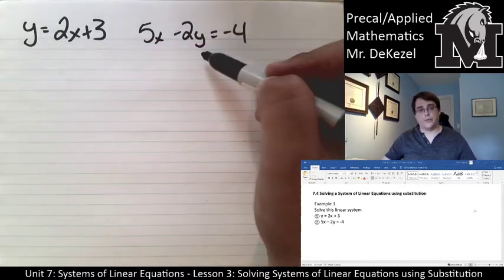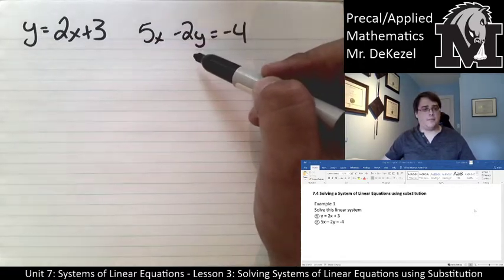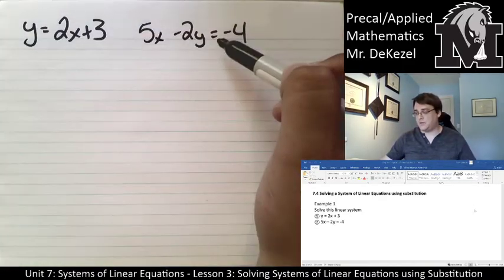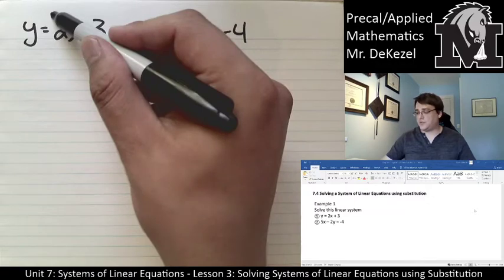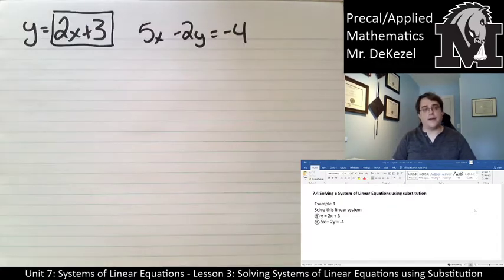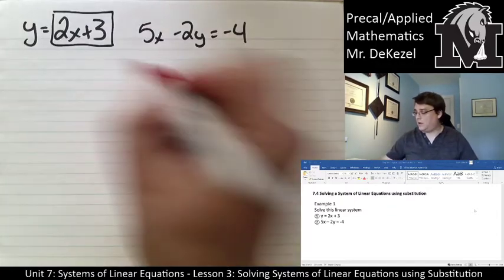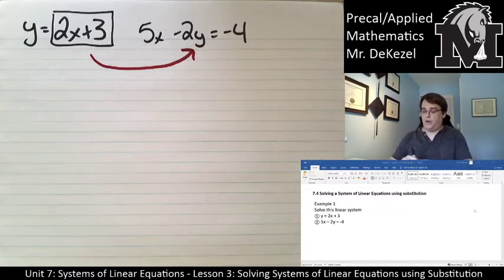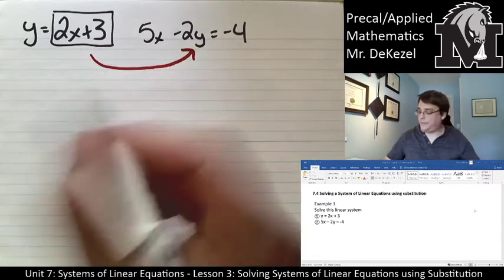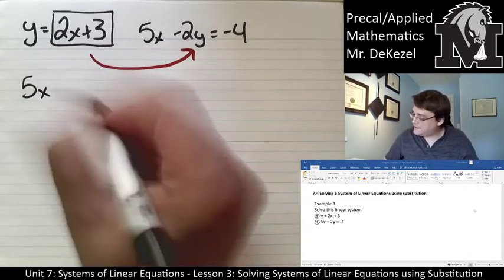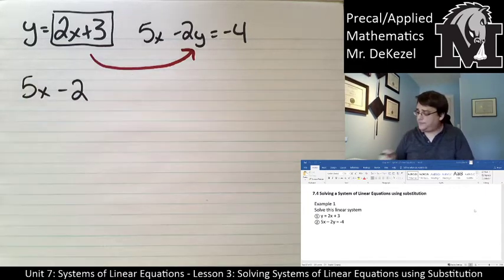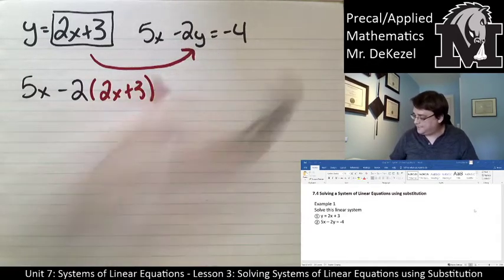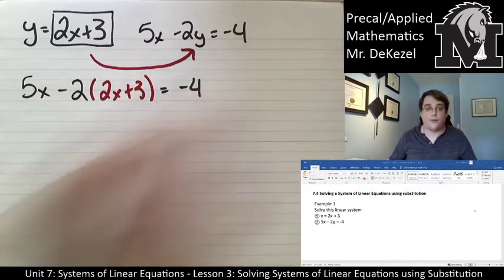...when I have that and I have another equation 5x minus 2y is equal to minus 4, these y's are equal, they are the same, they must be the same to satisfy both of these equations. So if y is equal to this, I can plug that in over here because I have a y. What I'm left with then is 5x minus 2 times what we had before, 2x plus 3 and that all equals minus 4.